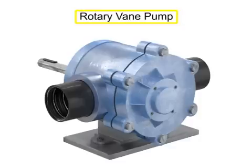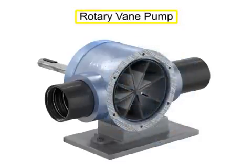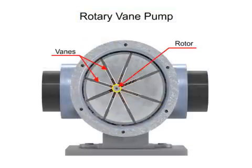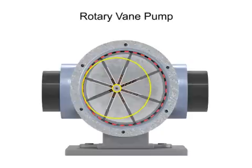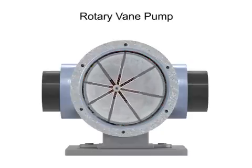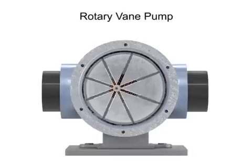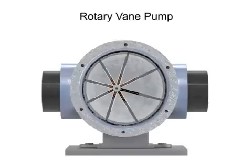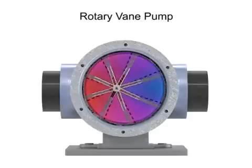A rotary vane pump is a positive displacement pump that consists of vanes mounted to a rotor. The vanes are on an off-center drive shaft. As the shaft rotates, the variable length vanes slide in and out to maintain contact with the pump housing. The tension in the vanes is maintained by either springs or hydraulic pressure. As the vanes rotate, they create chambers of varying sizes within the pump.